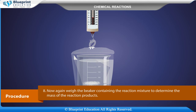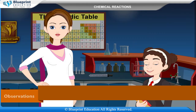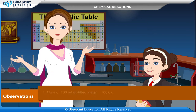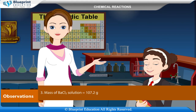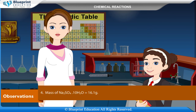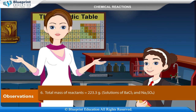Weigh the beaker containing the reaction mixture to determine the mass of the reaction products, and compare the masses of reactants and products. Observations: Mass of 100 ml distilled water = 100 grams. Mass of barium chloride = 7.2 grams. Mass of barium chloride solution = 107.2 grams. Mass of sodium sulfate = 16.1 grams. Mass of sodium sulfate solution = 116.1 grams. Total mass of reactants = 223.3 grams.